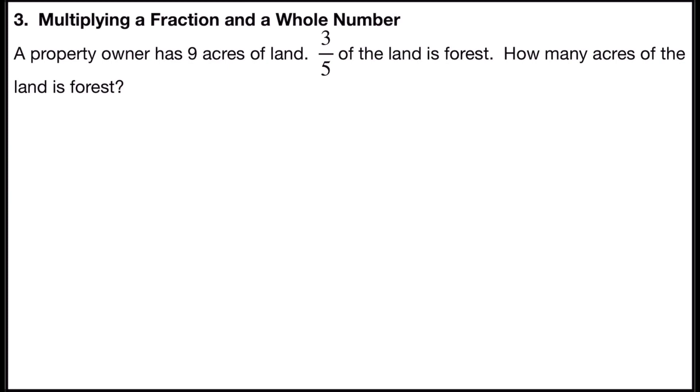So here's the key to show you that it's multiplication: it says three-fifths of the land, and the word 'of' means multiply. So we're going to multiply nine by three-fifths. We could put nine over one to show the fraction and then do what we did in the past two problems.